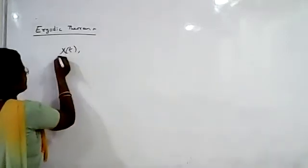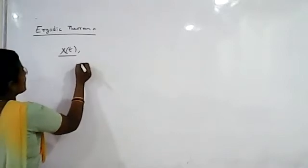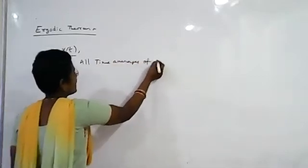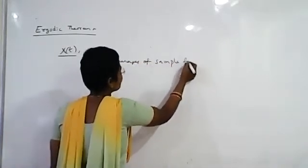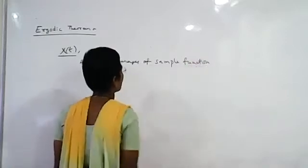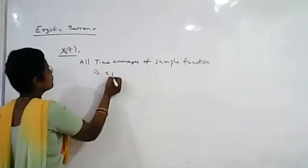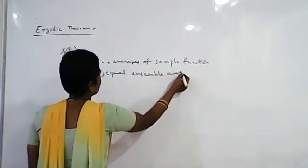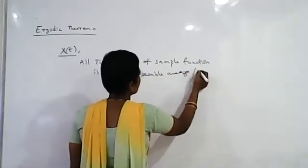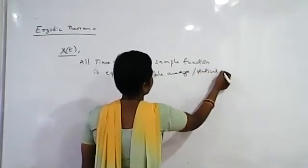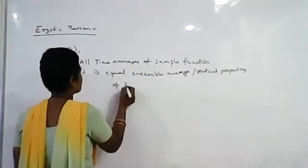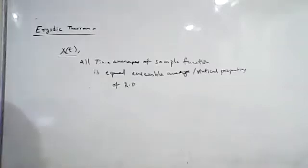The Ergodic theorem says that for any random process x(t), all time averages of sample functions are equal to the ensemble averages, which is the other name for the statistical properties of random processes. If this condition is true, this is called the Ergodic theorem.